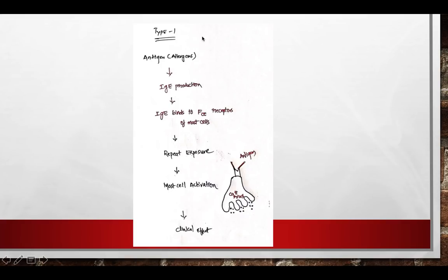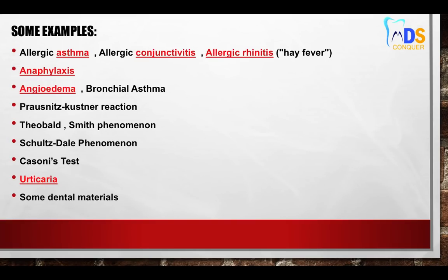In terms of pathophysiology: whenever an allergen or antigen enters, it sensitizes and activates IgE production. Once IgE is produced, it binds to mast cells via the FCε receptor. When repeated exposure to the same antigen occurs, mast cells get activated and release calcium, and when calcium rises, it produces the clinical outcome.